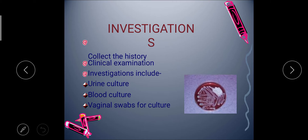For investigation or diagnostic evaluation — how we will come to know that the mother is having puerperal sepsis — first we collect the history, from which we can learn about any malnutrition or anemia. Next we have clinical examination or physical examination, a head-to-toe examination. Investigations include urine culture, blood culture, and vaginal swab for culture to find out which bacteria has affected the patient. This is the diagnostic evaluation.